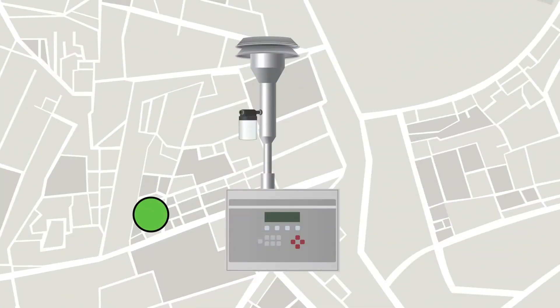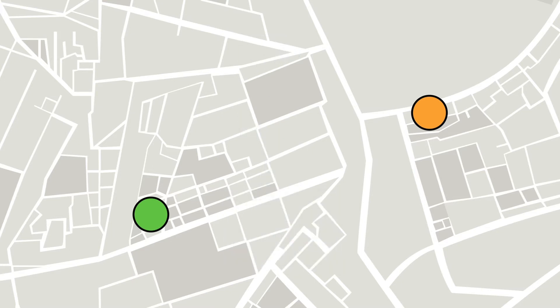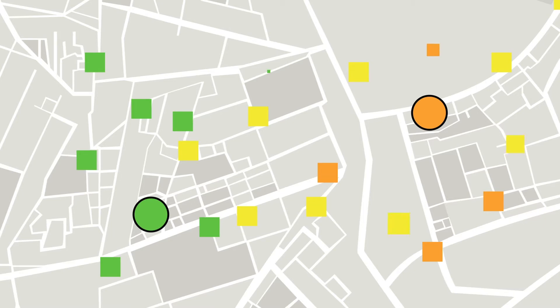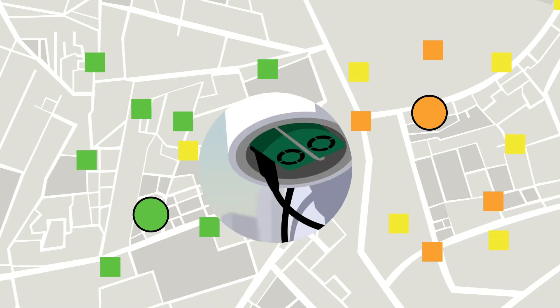Air quality agencies operate sophisticated and expensive instruments to measure air pollution, but these monitors can be sparse. Recent advancements in technology have made low-cost air sensors available. Although they don't meet federal standards, they may be able to help fill in some of the gaps.